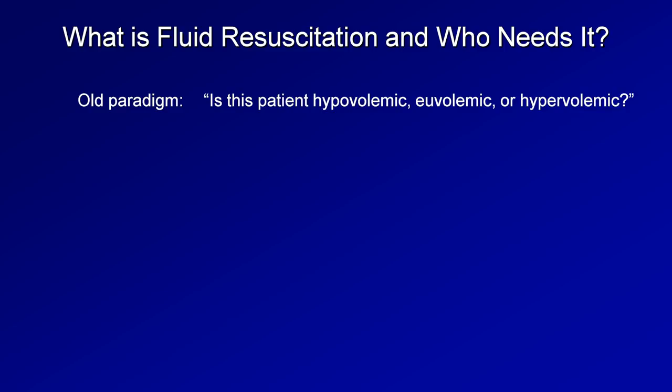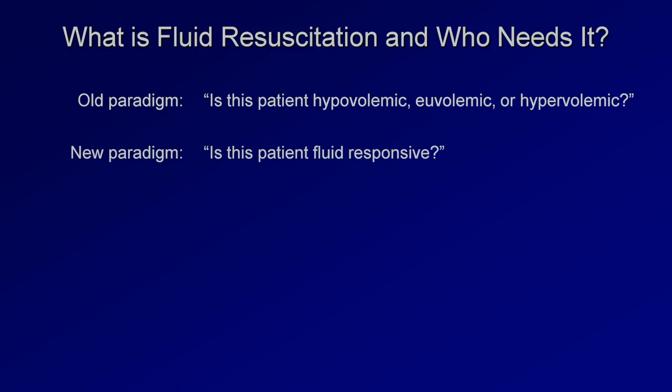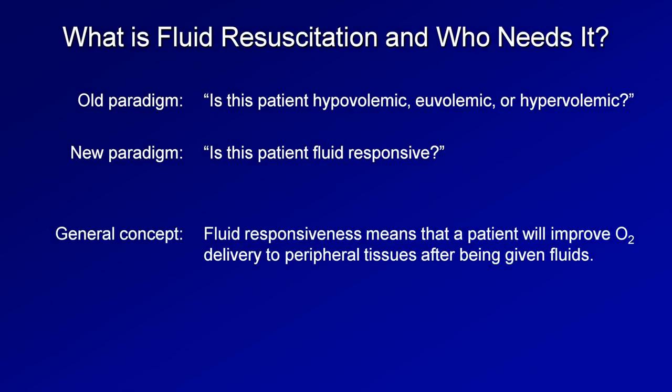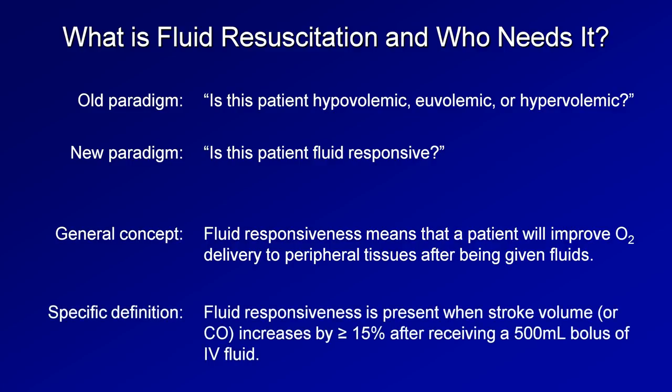We would base this question on a number of static measures such as CVP or pulmonary capillary wedge pressure. In the new paradigm, instead we now ask: is this patient fluid responsive? This question is based on dynamic measures in which we see how a physiologic parameter changes in response to some type of maneuver. The general concept of fluid responsiveness is simply that a fluid responsive patient will improve his or her oxygen delivery to peripheral tissues after being given fluids. More specifically, fluid responsiveness is present when either stroke volume, cardiac output, or cardiac index increases by at least 15% after receiving a 500 mL bolus.